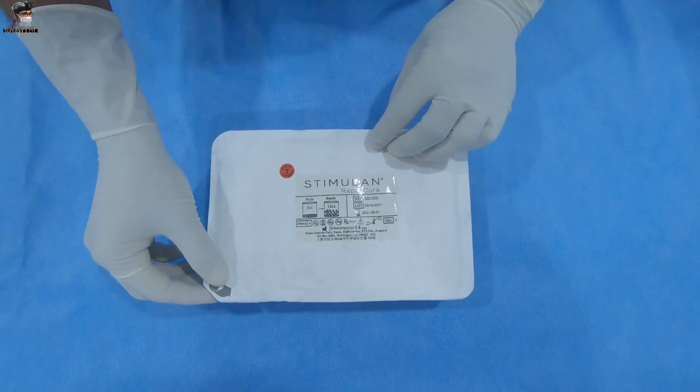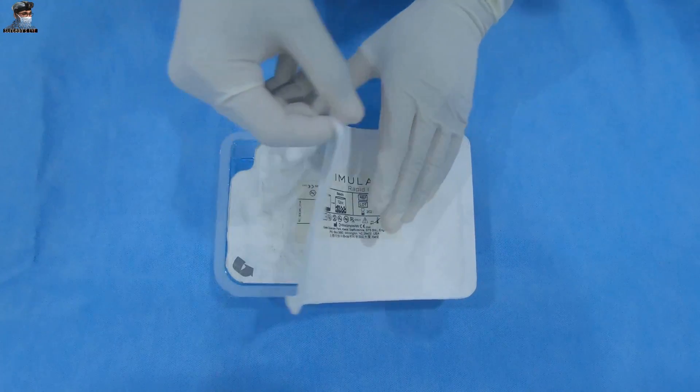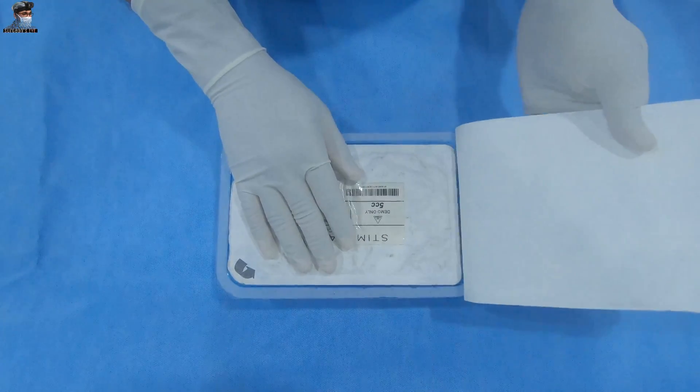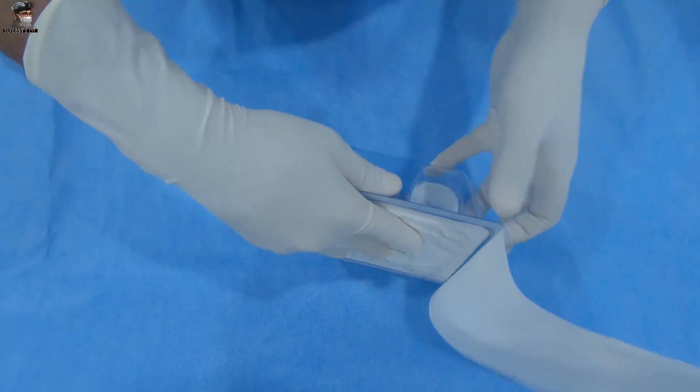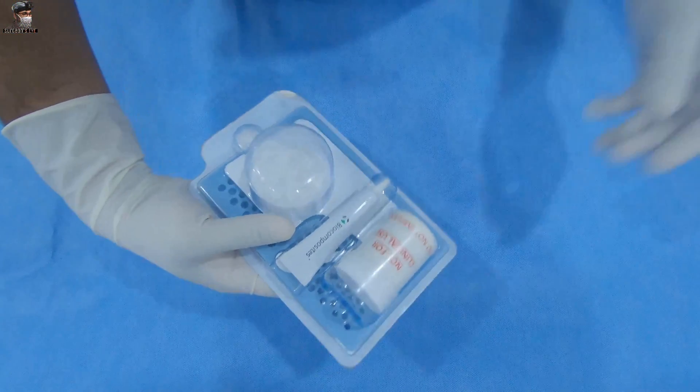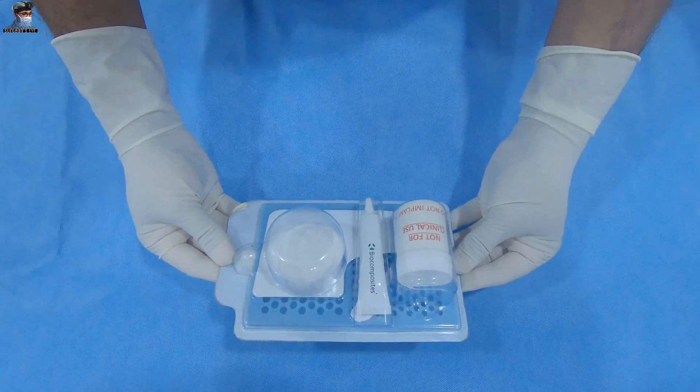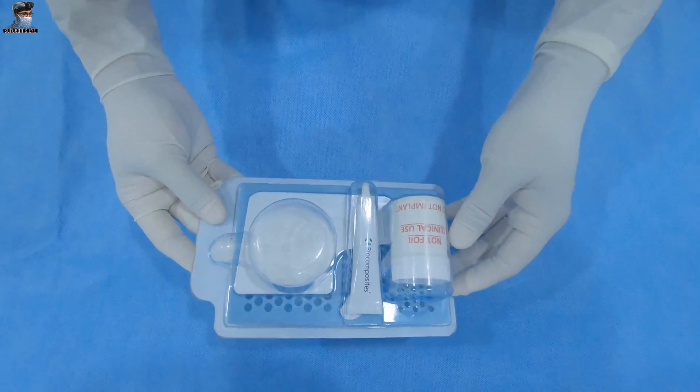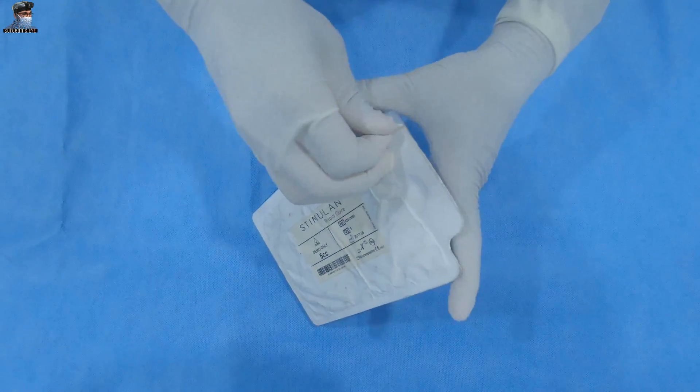The product is supplied sterile within a double pack. Open outer packaging using the standard aseptic no-touch technique to avoid contact with the contents. Aseptic personnel only must handle the inner pack. Remove all components from the inner pack.